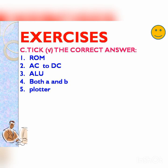Next: tick the correct answer. From the book, four options are given, so tick the correct answers. Number 1: ROM. Number 2: AC to DC. Number 3: ALU. Number 4: both A and B. Number 5: BLOTTER. Tick mark.